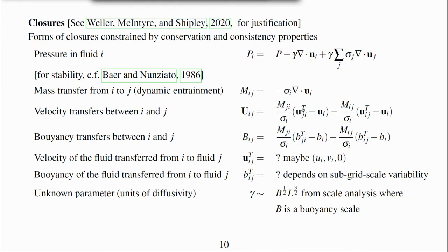U_ij superscript t is the velocity of the fluid transferred from i to j, which may not be the same as the velocity of fluid i.